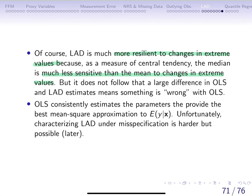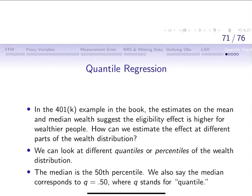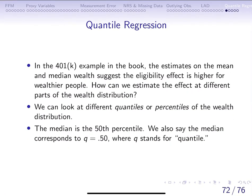Both OLS and LAD consistently estimate the parameters. The other type of regression we encounter is called quantile regression. The idea is that if we do not want to look at just the 50th percentile — the median — we can look at what is going on across the entire distribution.